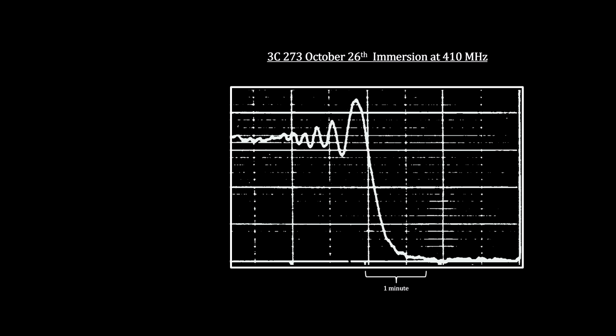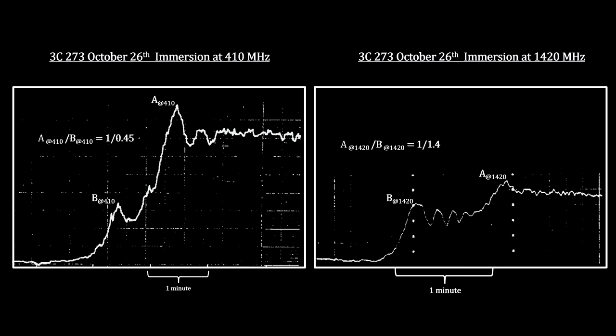With the angular data, the astronomers were able to calculate accurate positions for the two components. And here are two immersions at different frequencies collected on October 26th. Note the significant reduction in intensity for component A at the higher frequency.